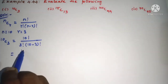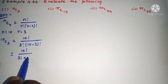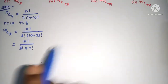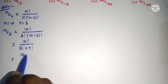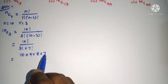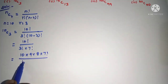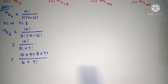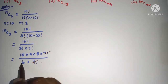Now, 10 factorial as it is divided by 3 factorial into 10 minus 3, which is 7 factorial. Now the 7 factorial is cancelled. The numerator 10 factorial becomes 10 into 9 into 8 into 7 factorial, which equals 7 factorial. We know that 3 factorial is 6. Now 7 factorial will cancel.